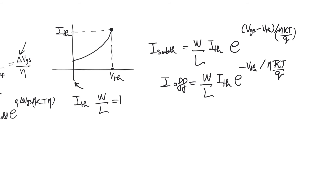The off current depends on I_threshold (determined by technology), the transistor size W/L, and how fast the current drops. W/L increases off current but also increases on current by the same factor, so it doesn't change the on-to-off current ratio. However, large transistors can leak away a lot of charge in dynamic circuits, so size does still matter in that context.